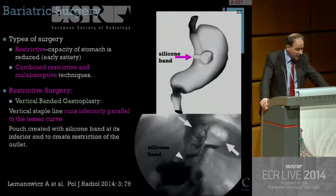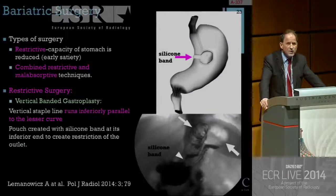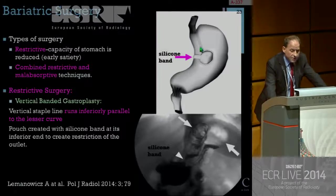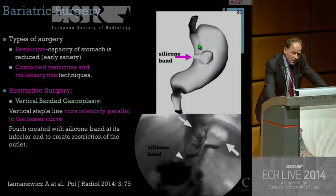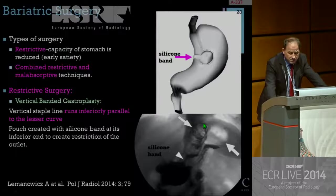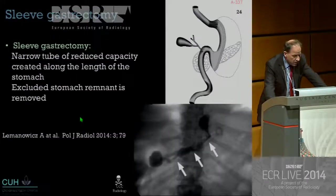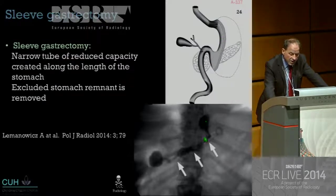Moving on to bariatric surgery: the two main types are restrictive surgery and the more complex combined restrictive and malabsorptive types. The vertical banded gastropexy uses a GI stapler to form a suture line parallel with the lesser curve of the stomach, creating a narrow gastric tube with a silicone band at the lower end for further restriction. On barium you see the suture line, the narrow tube, and silicone band restriction, with the excluded stomach regaining continuity at the level of the gastric antrum. In sleeve gastrectomy, a similar narrow tube is formed but the excluded stomach is resected.